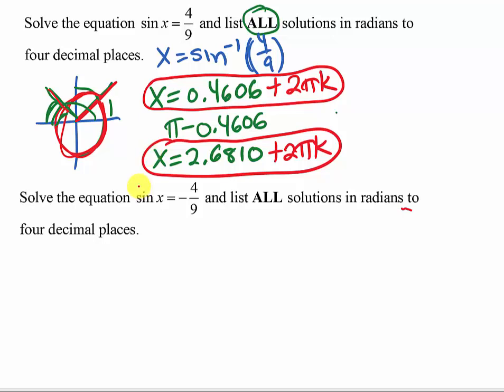Now, I want to look at the same kind of thing, but what if we would have had a negative? So first of all, x is going to be sin⁻¹(-4/9).